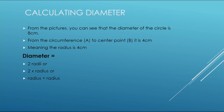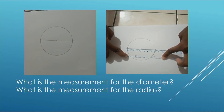Two times radius gives you the diameter. Or you can say radius plus radius — it gives you the same answer, the diameter. Just like in the drawings, we saw there was four as the radius on one side and four on the other side. So these are two radiuses. Radius plus radius equals diameter.